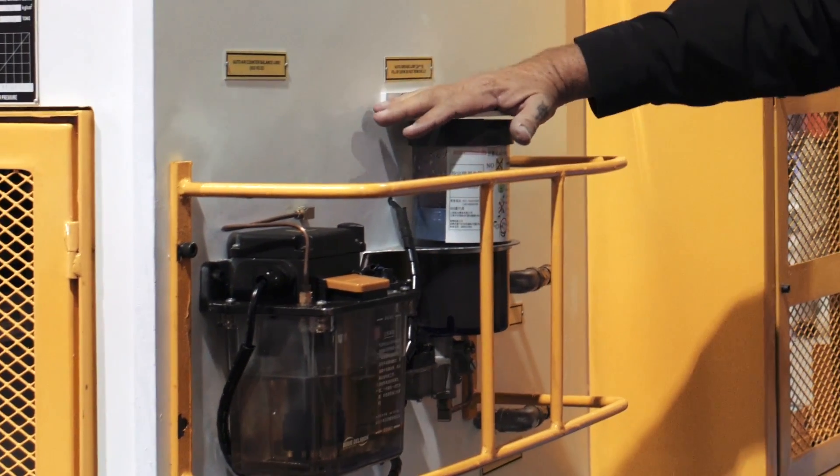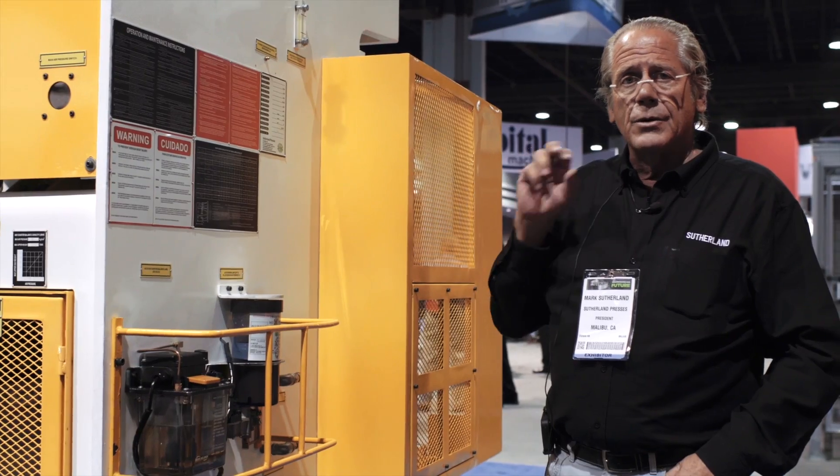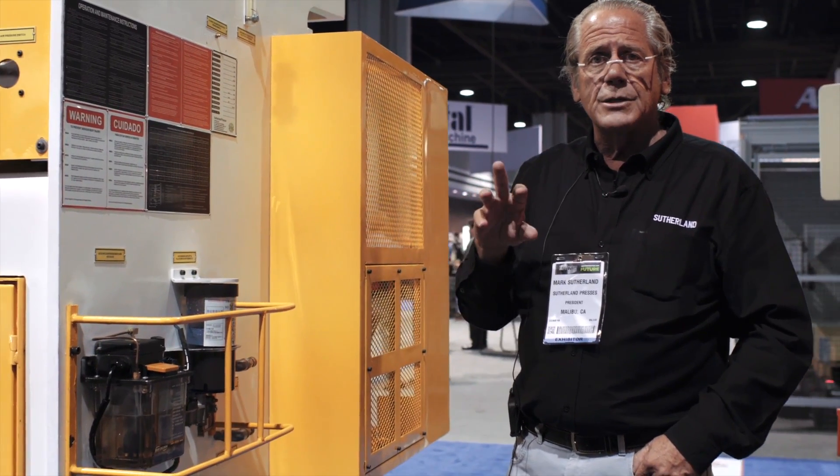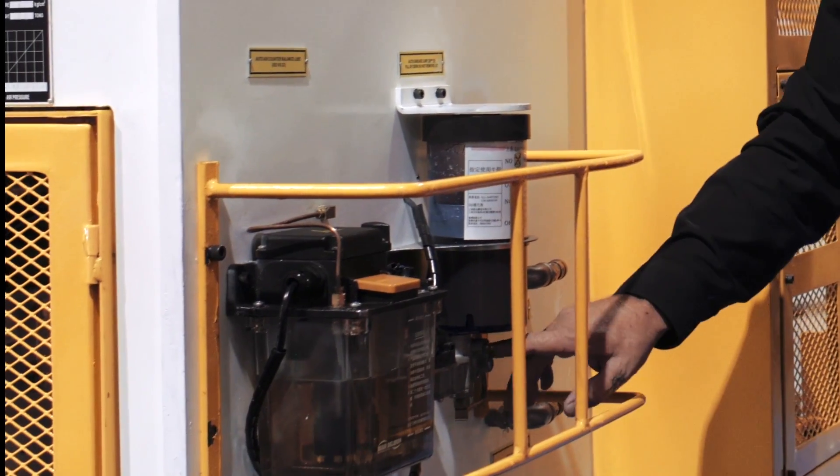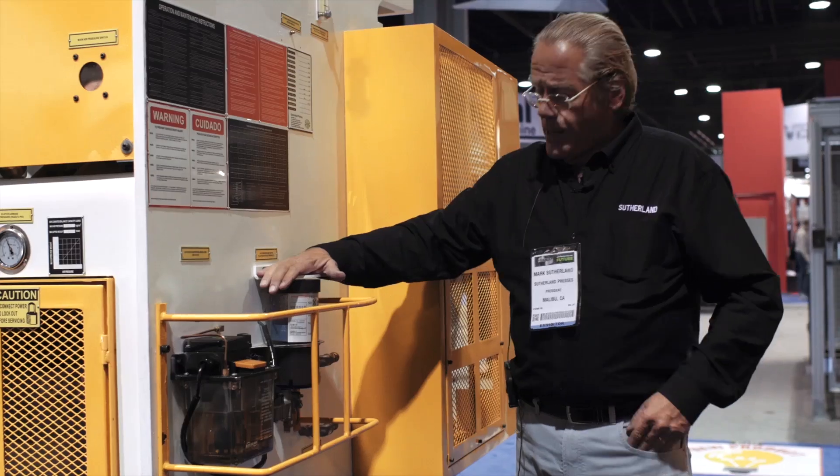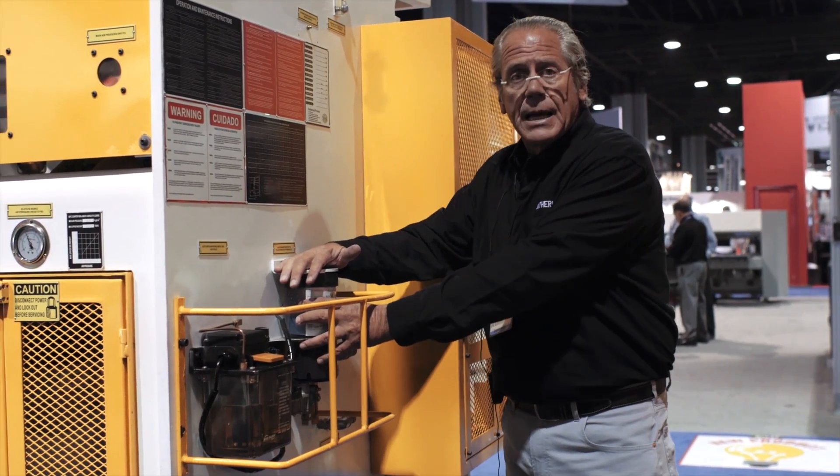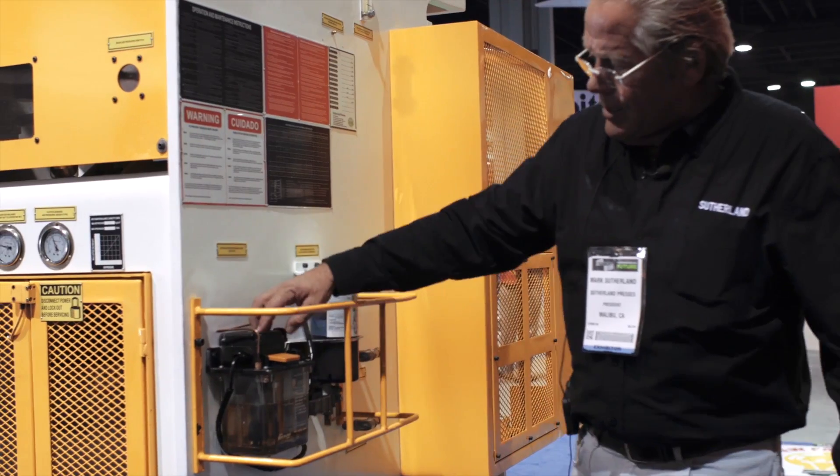Automatic grease lubrication system, which is tied to the iPress control, and you can regulate how much grease based on the speed you're running the press. This is only filled through the bottom. As you see, we have a protective guard on the top, and that prevents air getting into the grease system, so you don't have to bleed it.